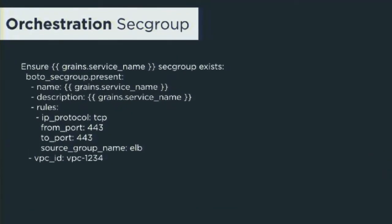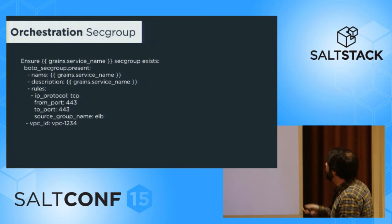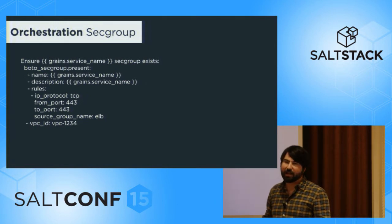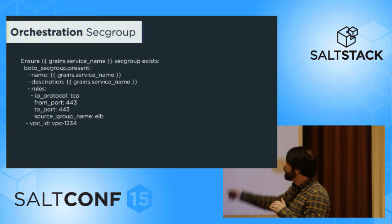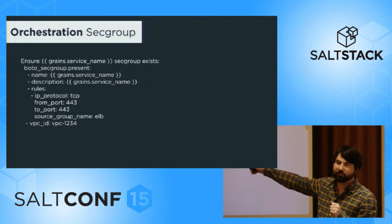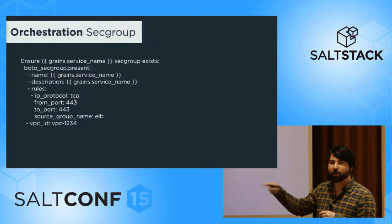The next step we would probably go through in creating a cluster is to create a security group. We use grains so that we can do templates for this. In this case, we are giving access to port 443 to a named security group. Something to notice is that we're using a VPC. If you've used Amazon and VPCs, you know that you cannot actually use named security groups when referencing security groups in a VPC. So we've written these modules so that you can always use named resources — you never have to use any IDs from Amazon — so you can do a full run using only references to the other resources. What this state will do is see that it's modifying a VPC security group, look up the name for the security group, translate that into a security group ID, and use that to talk to Amazon.